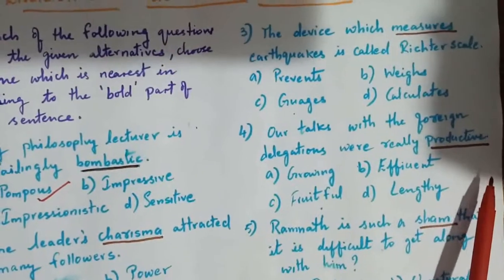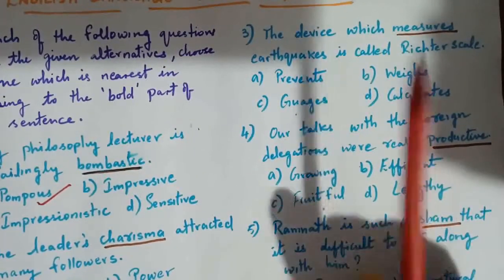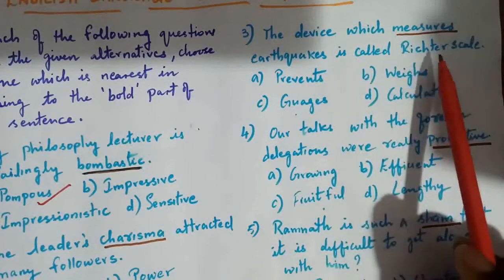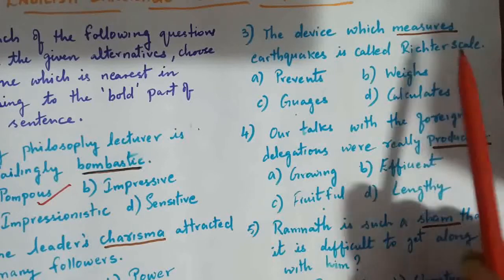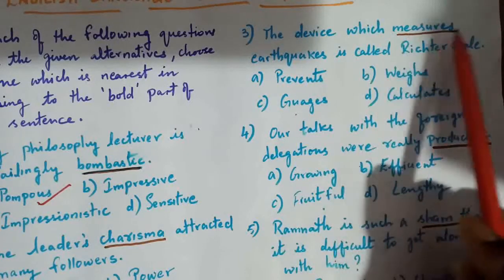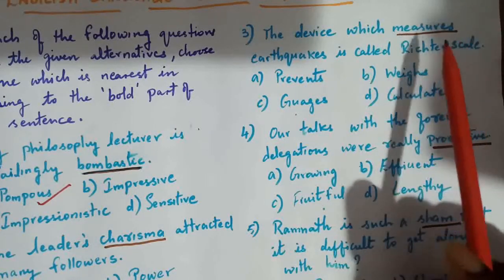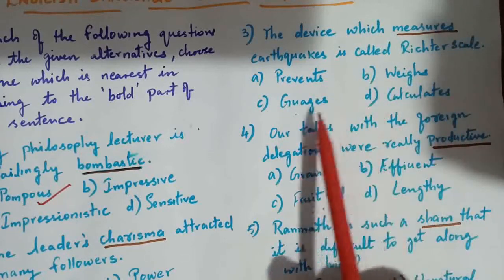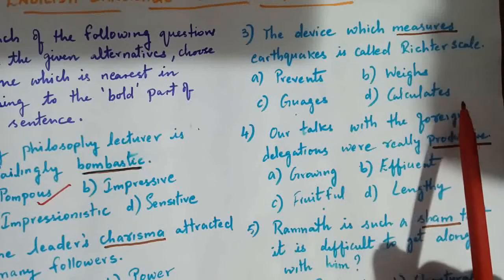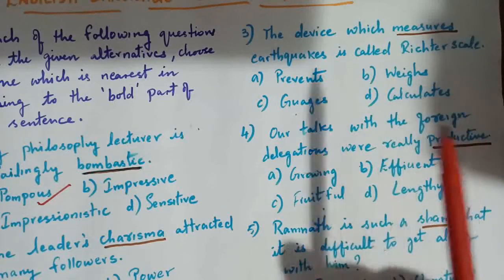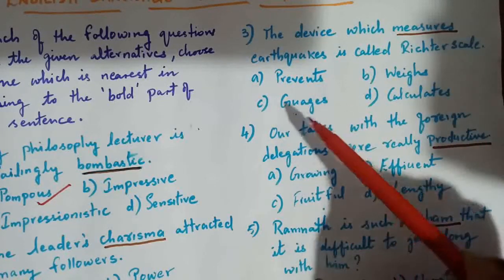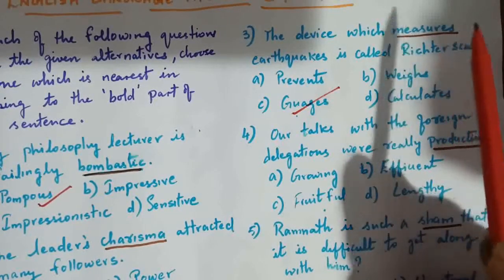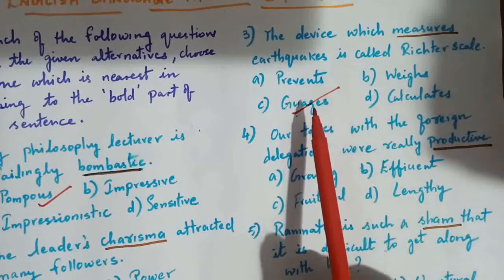Next question is: the device which measures earthquakes is called Richter scale. The options for the underlined word 'measures' are: prevents, waste, gauges, calculates. And the answer is option C, gauges. Another alternative word similar in meaning to 'measures' is gauges.